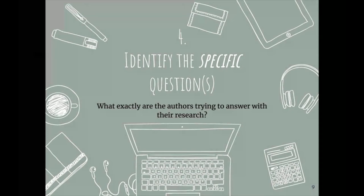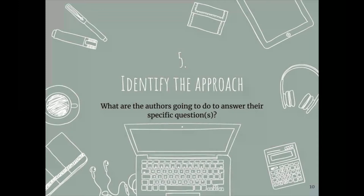Step five: identify the approach. You've read the introduction, noted the big question, summarized the background, and narrowed down to specific questions. Now think about what the authors are going to do to answer those questions. This could be an experiment they're planning, or perhaps they're measuring data from collected results across a certain field. Write something down about this — it will help you later, especially with the academic-to-popular translation assignment.